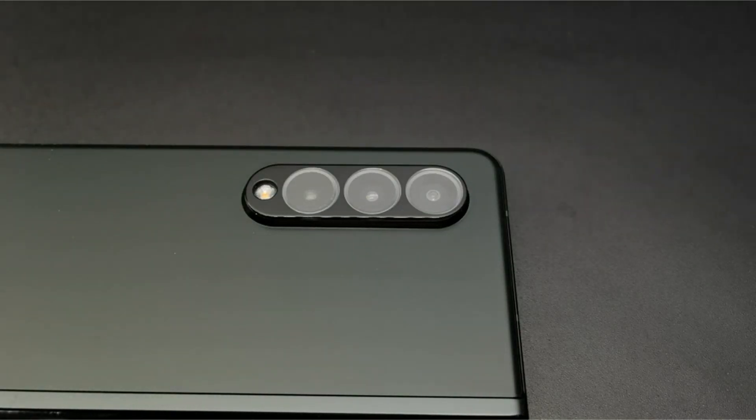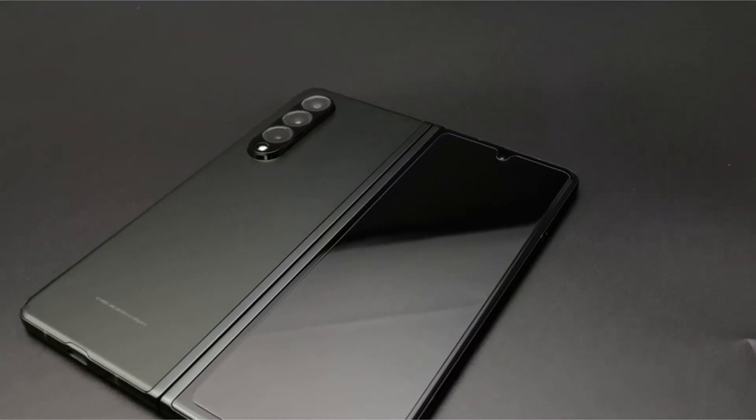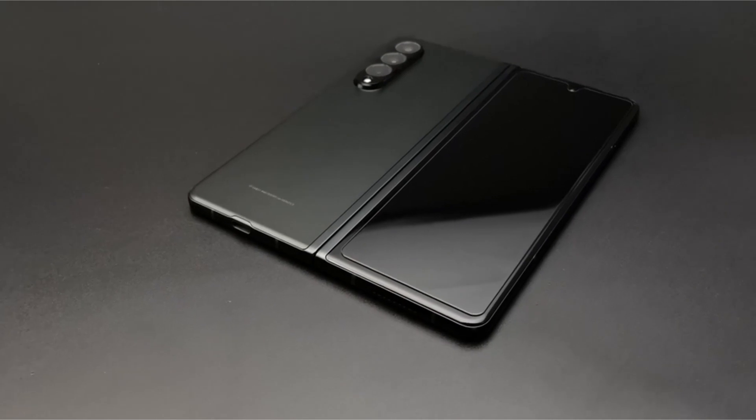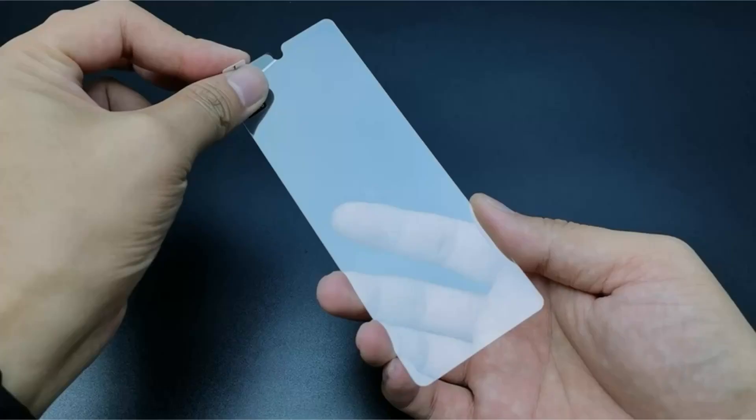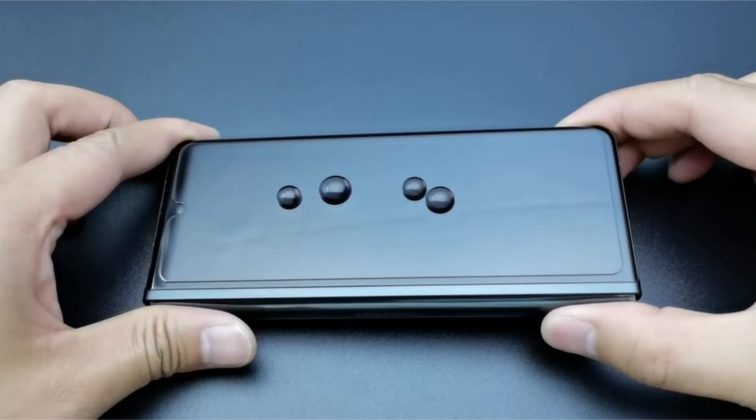The screen protector works great when paired with a case. Without a case, the front screen protector will appear smaller. It gives you a screen protector and a camera lens protector made of the best 9H tempered glass that is now available to protect your screen and camera from light drops, unintentional bumps, and everyday wear and tear.